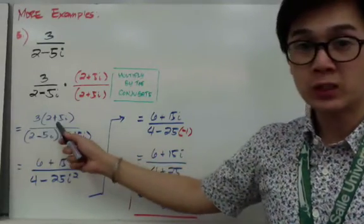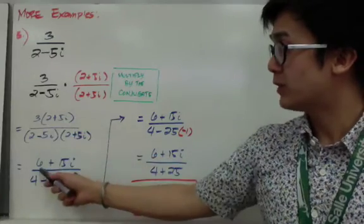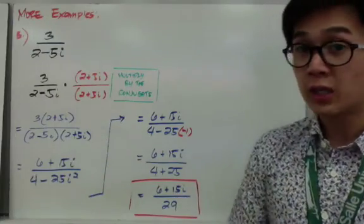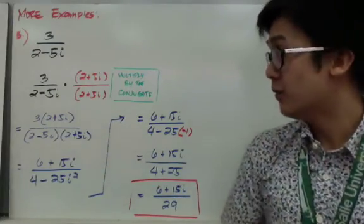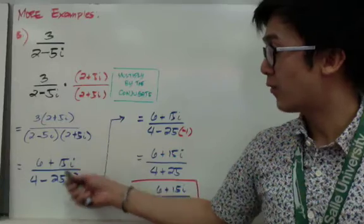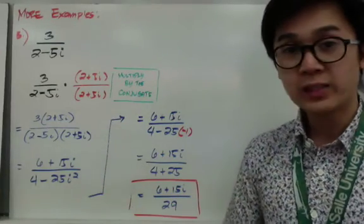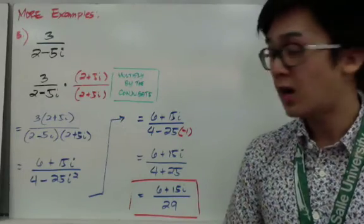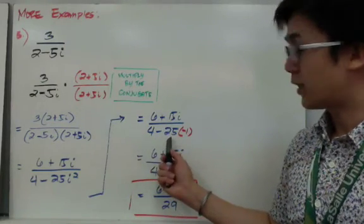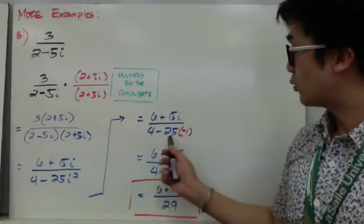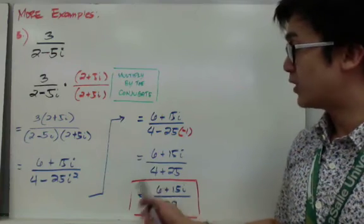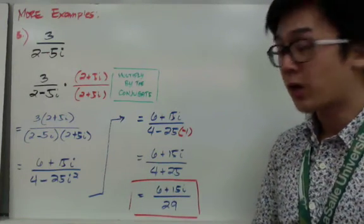For the numerator, 3 times 2 is 6 and 3 times 5i is 15i. For the denominator, we use the shortcut method: 2 times 2 is 4, and negative 5i times positive 5i is negative 25i squared. So we have 6 plus 15i all over 4 minus 25i squared. Changing i squared to negative 1, we get 4 minus 25 times negative 1, which gives positive 25 in the denominator.